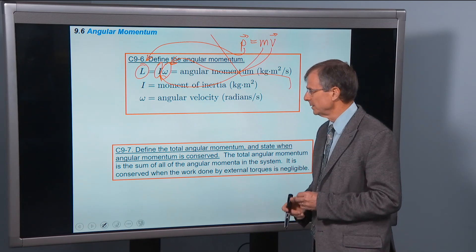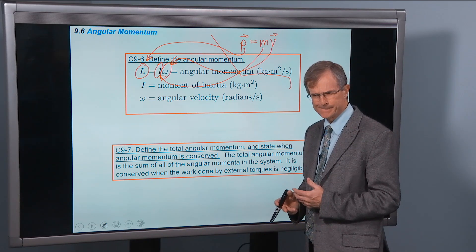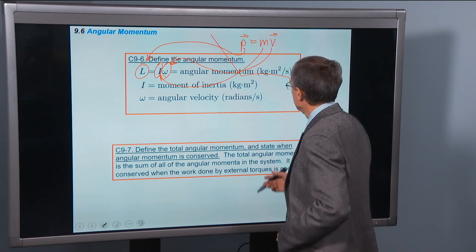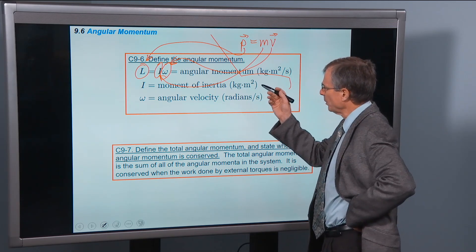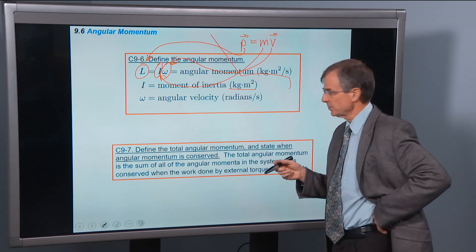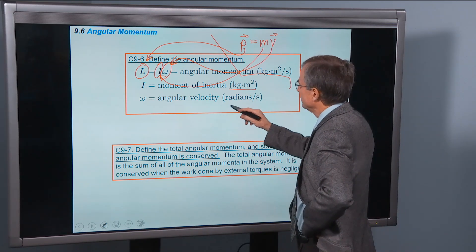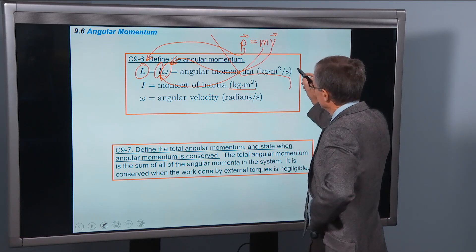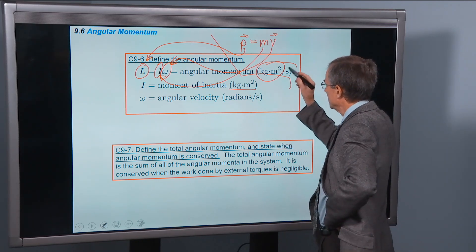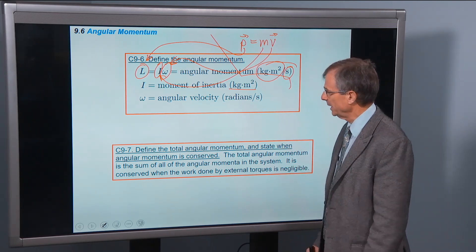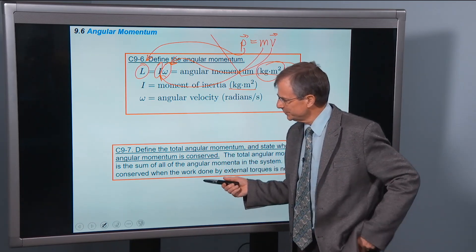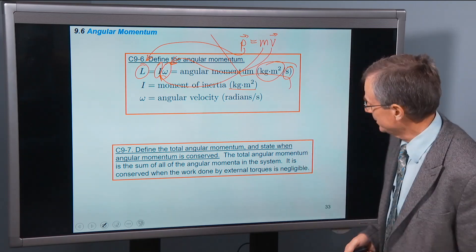I is the moment of inertia. Omega is the angular velocity in radians per second. This whole chapter will measure these velocities in radians. The units of angular momentum are going to be the units of moment of inertia, kilogram meters squared, times the units of omega, which is radians per second. So we get the kilogram meters squared from the moment of inertia, and then we get the per second from the angular velocity. So finally, the last concept in this chapter, I believe,